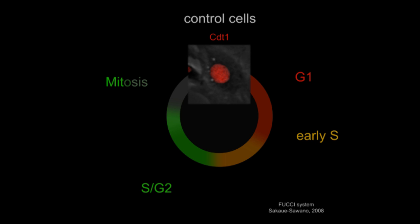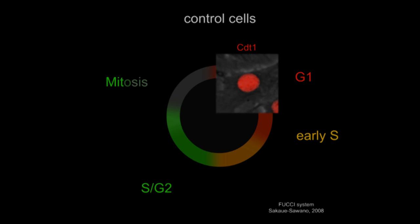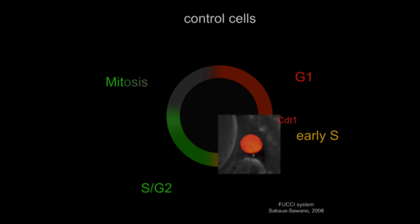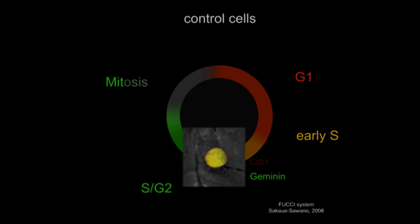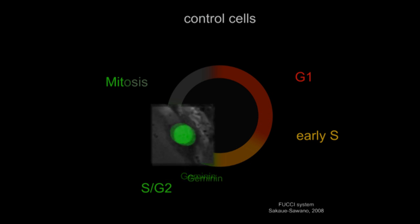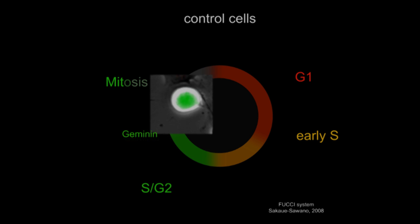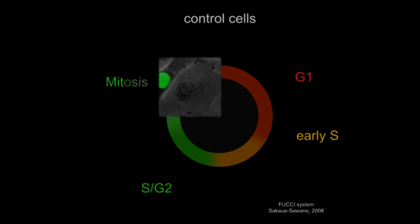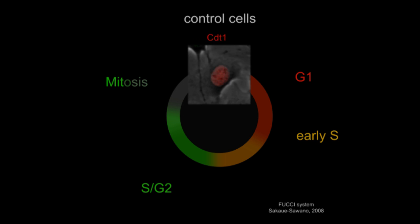In order to understand what was happening with geminin and CDT1, cells containing fluorescently tagged CDT1 and geminin were filmed using the FUCCI system. Normally, cells express the red fluorescent CDT1 in G1 and become yellow when they enter DNA replication because green geminin is expressed as well. Geminin stays through G2 and is then degraded as cells go through mitosis, resetting the system so that CDT1, which comes back in G1, can license replication origins.